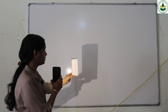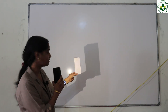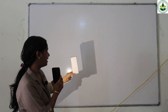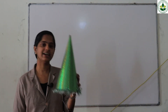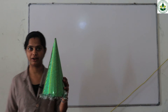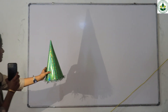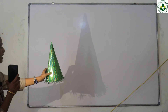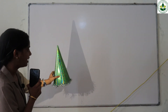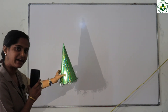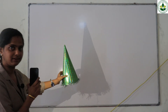The cuboid's shadow looks like a rectangle. Next, this is a cone. We can check the shadow of this cone. Look here — what shape do you see? It looks like a triangle.